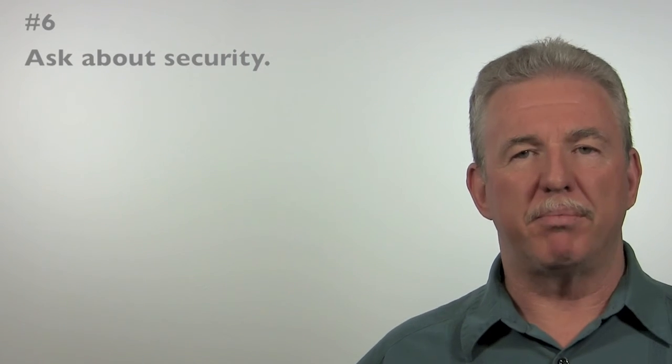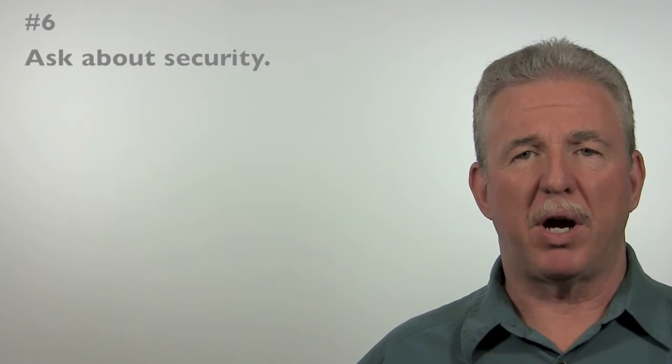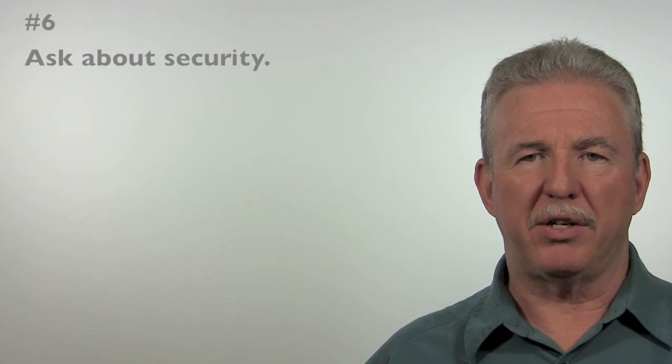Number six: ask about security. Find out how many levels of security are going to be needed and whether or not you're going to have to build in logging. Also, ask about record locking. For example, when an invoice is submitted or when a journal entry is processed, those items can't be changed. They have to be locked. You need to know this.